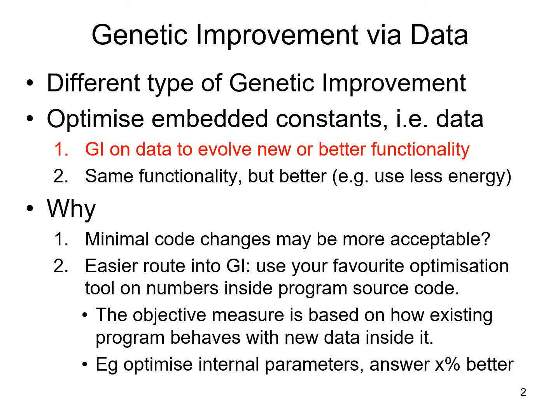As I said, mostly genetic improvement work is concentrated on evolving source code. Here we look at data. We show examples where we've evolved programs which give better functionality or indeed new functionality. But potentially, evolution of data could also retain existing functionality while simply improving the program — maybe making it faster or using less energy. And maybe changing the code might be less acceptable, so if we can change data rather than code, that might be more acceptable to users.